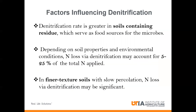What are some of the triggers of denitrification? Three points: first, denitrification rate is greater in soils containing residue, because these residues serve as a food source for the microbes involved in the denitrification process. In a state like Tennessee, where we have substantial corn growers that practice no-till, we will typically have higher residues or corn stubble. Depending on soil properties and environmental conditions, nitrogen loss through denitrification may account for 5 to 25% of total nitrogen applied, typically occurring in finer-textured soils like clay due to slow percolation.